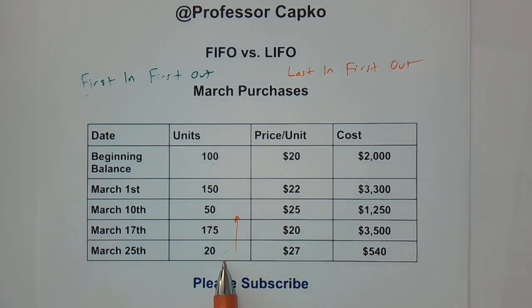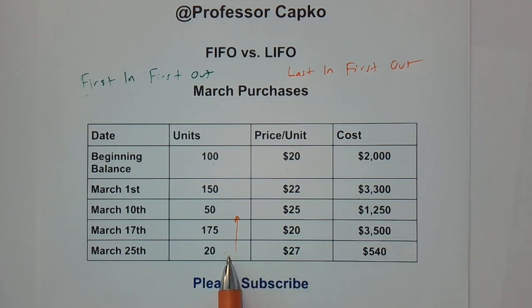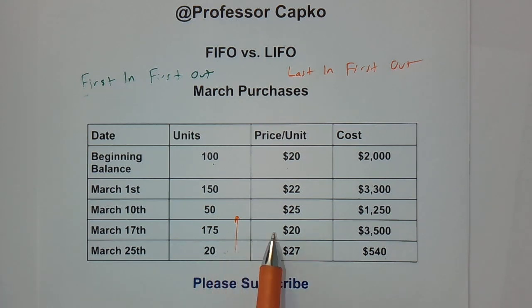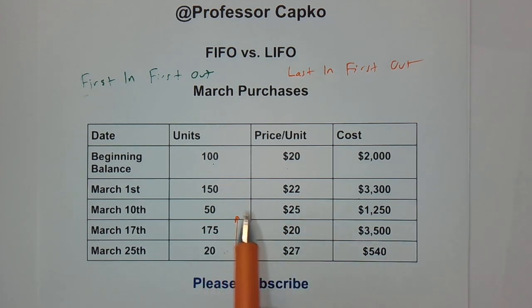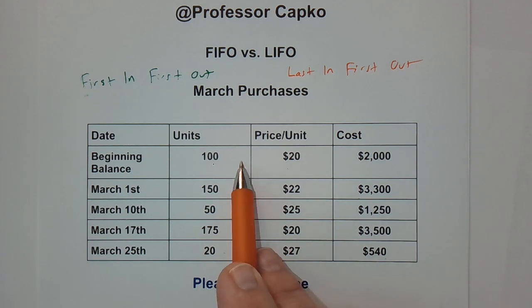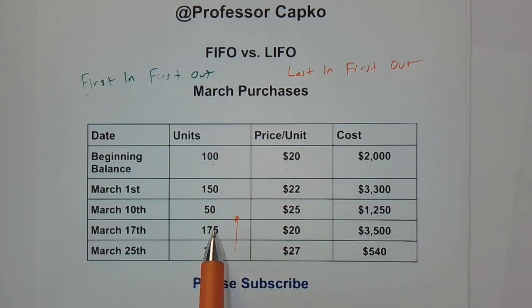So if we sold 100 units, we would take the first 20 units from the $27 per unit cost, and then the remaining 80 units for our 100-unit sale would come from the next group at the lower price. Each group would be used up, and once those units are gone we move up to the next group. That is how FIFO and LIFO differ.